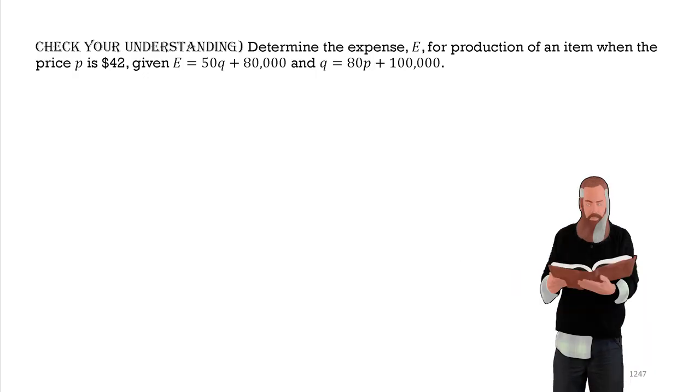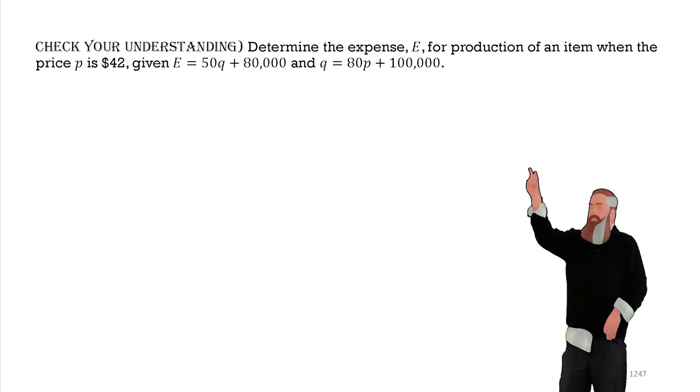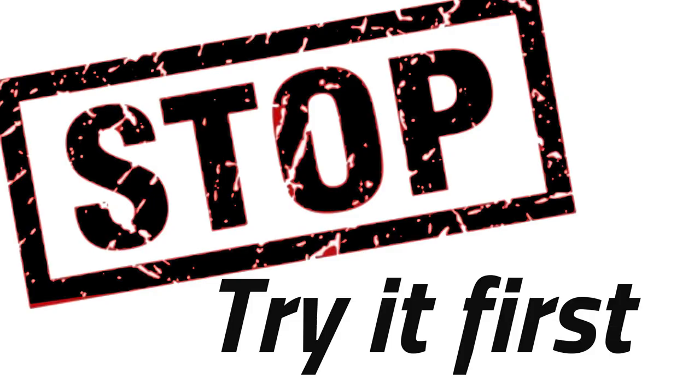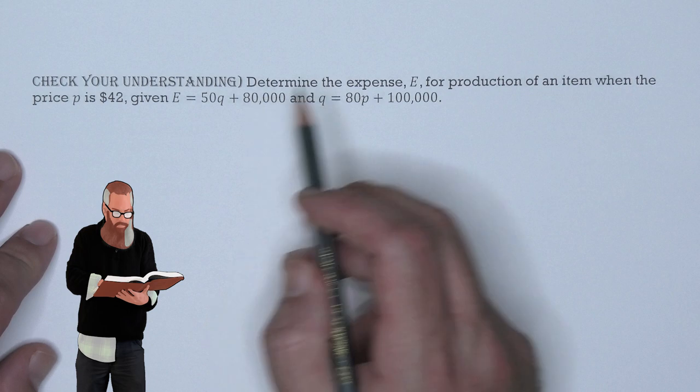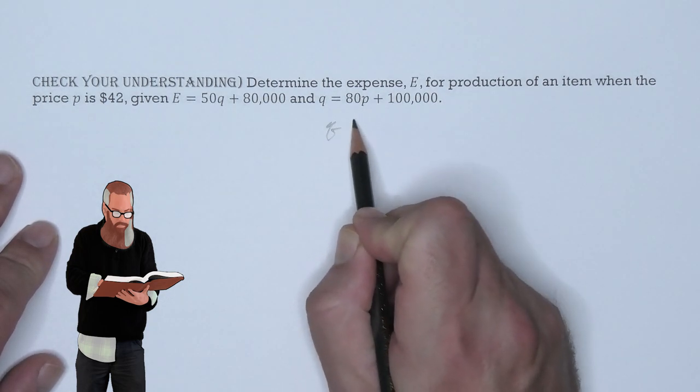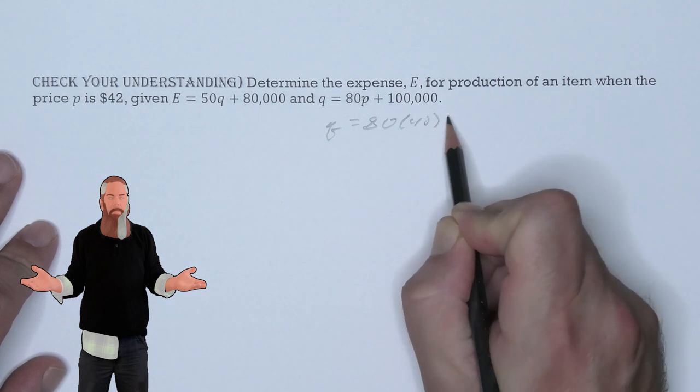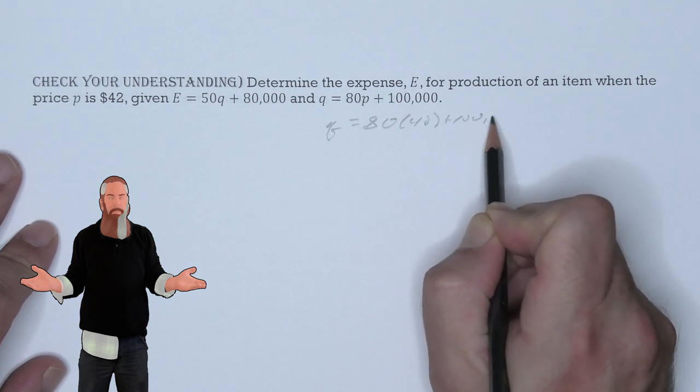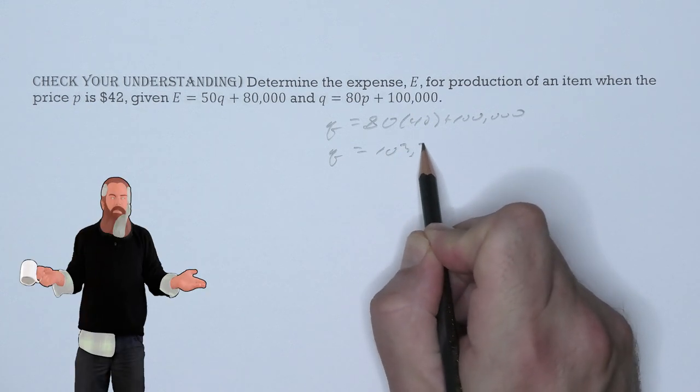Let's check our understanding. Determine the expense E for the production of an item when the price P is given $42, given the E and Q equation. I think it would be easier in this case to say that Q is 80 times 42 plus 100,000. This means that Q is 103,360.